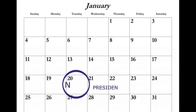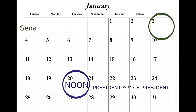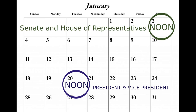Amendment 20: The Twentieth Amendment states that the President and Vice President's four-year term will end at noon on the 20th day of January. The terms of Senators and Representatives will end at noon on the third day of January. Congress must assemble at least once a year.